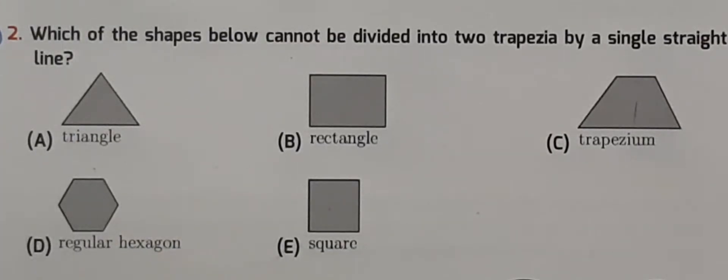The question is asking which of these five shapes cannot be divided into two trapeziums if we draw a line through them.